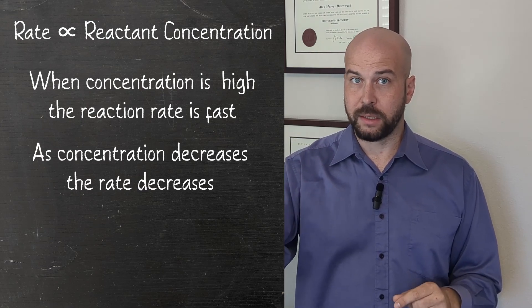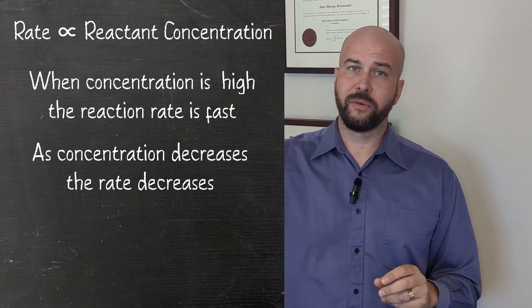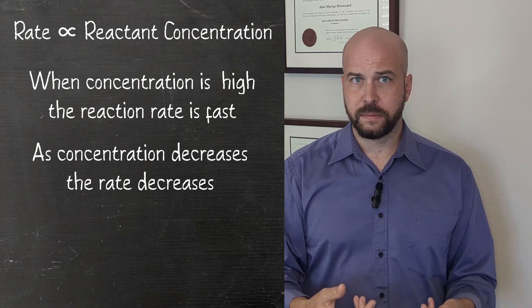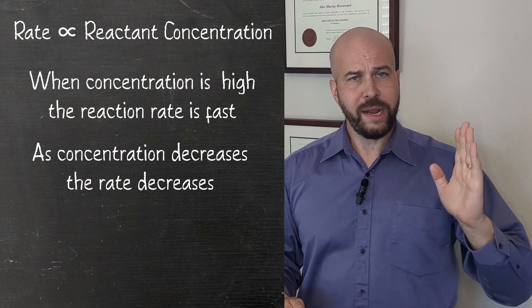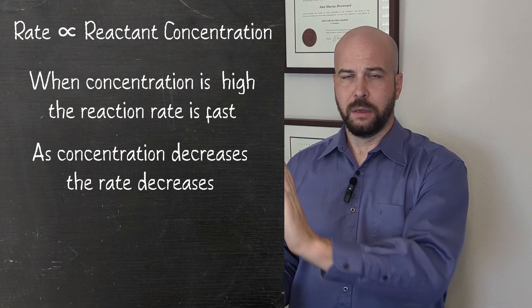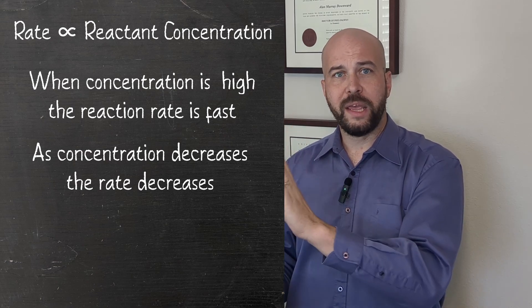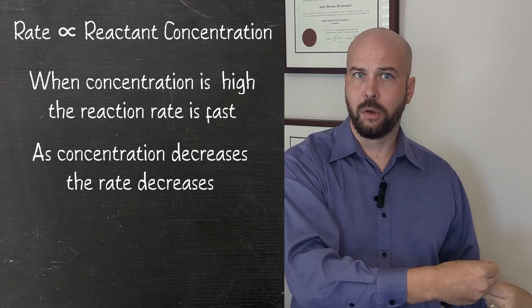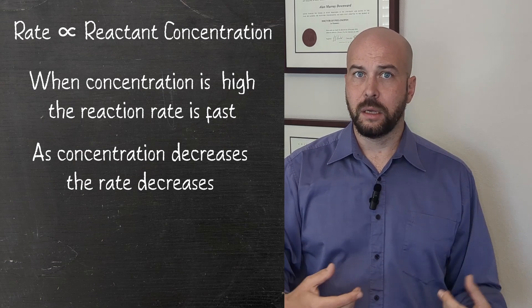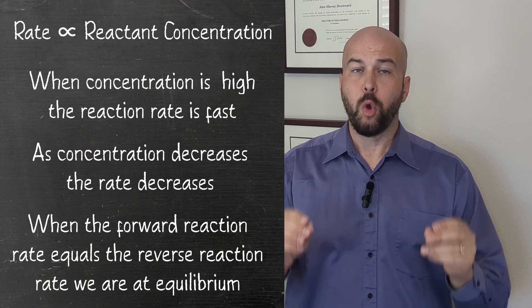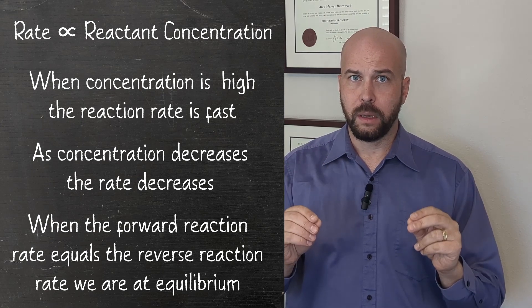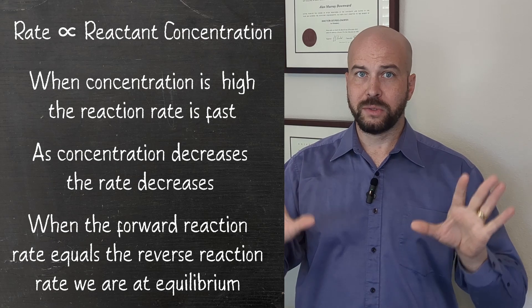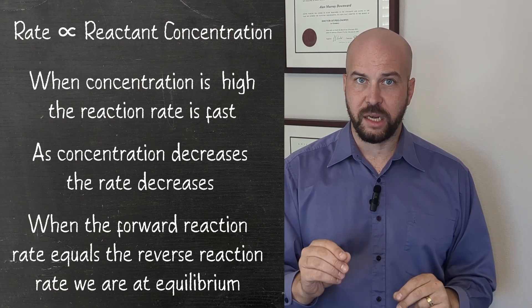Now we have some ethyl butanoate present, so it's going to start reacting to give us back ethanol and butanoic acid. Eventually, the rate of our forward reaction forming the ester will equal the rate of the reverse reaction giving back the alcohol and carboxylic acid. When this occurs, we are at equilibrium. The concentrations of our different chemicals in the solution no longer change.